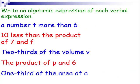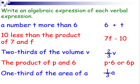You may want to pause it to see if you can try to do these five. Write an algebraic expression for each verbal expression. A number t more than 6, that would be 6 plus t. 10 less than the product of 7 and f, that would be 7f minus 10. 2 thirds of the volume of v, that would be 2 thirds v. The product of p and 6, that would be p times 6, or 6p. 1 third of the area of a, that would be 1 third a.